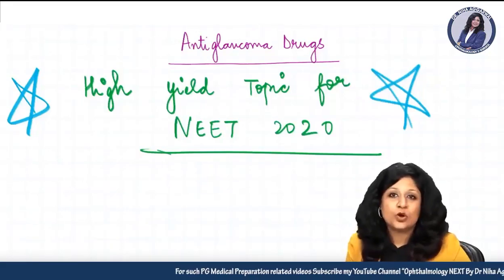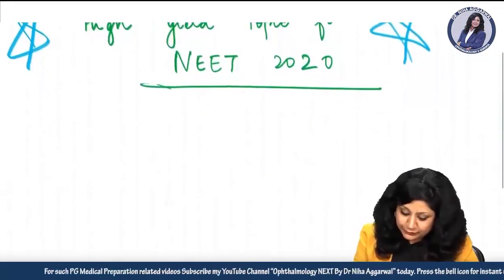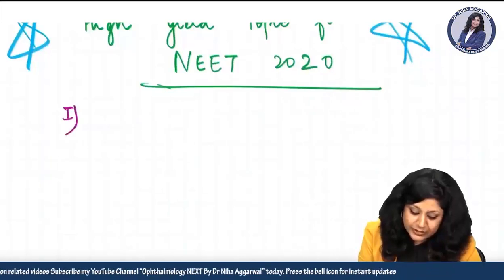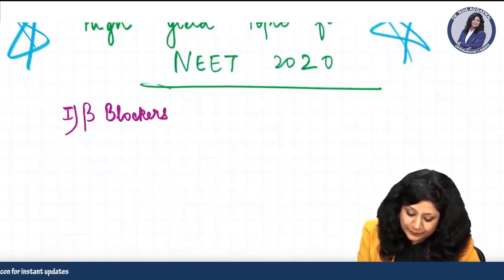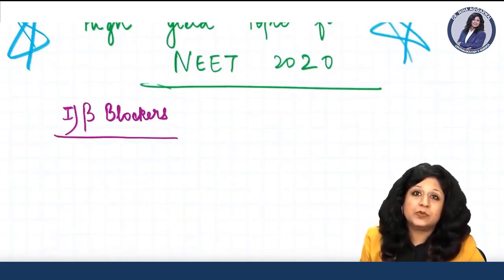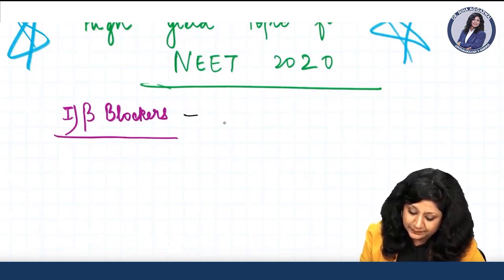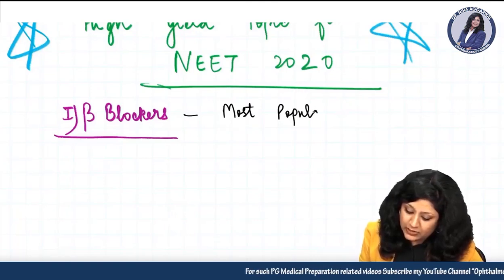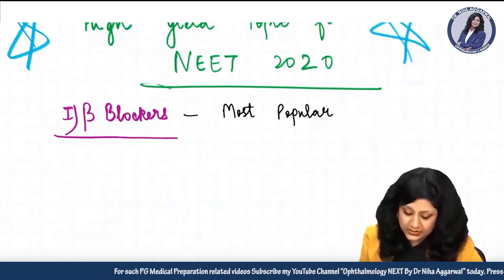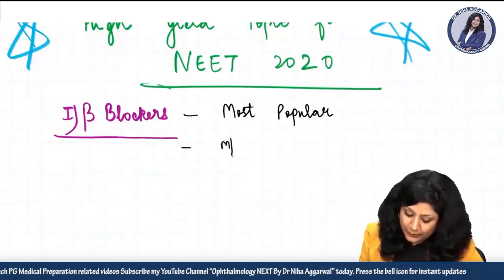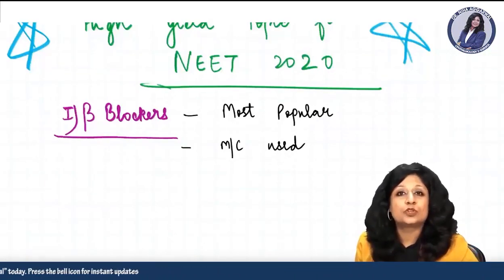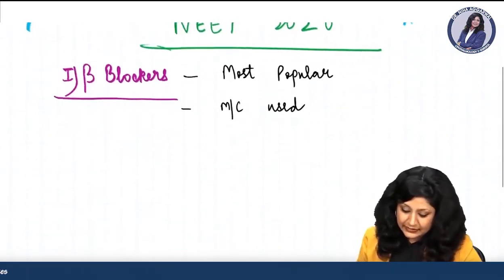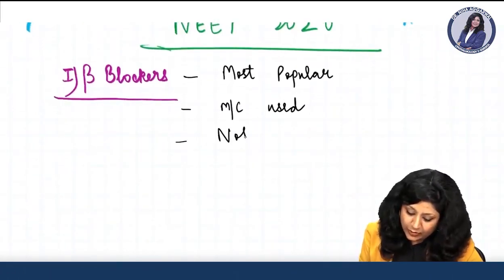Let us begin with the anti-glaucoma drugs. The first class I will start with is the beta blockers. The reason I have started with beta blockers is because these are the most popular and most commonly used anti-glaucoma drugs. They are not only most popular, they are also most commonly used drugs, but they are not the drug of choice.